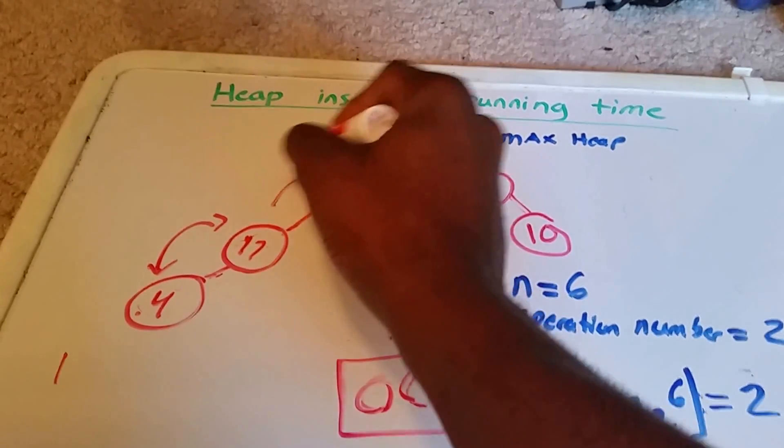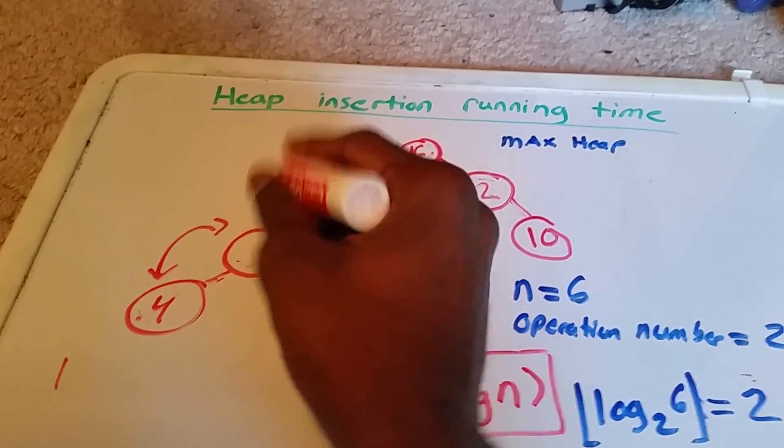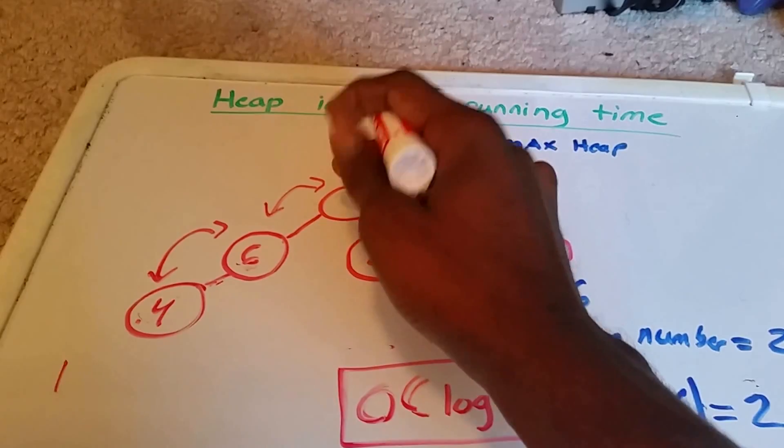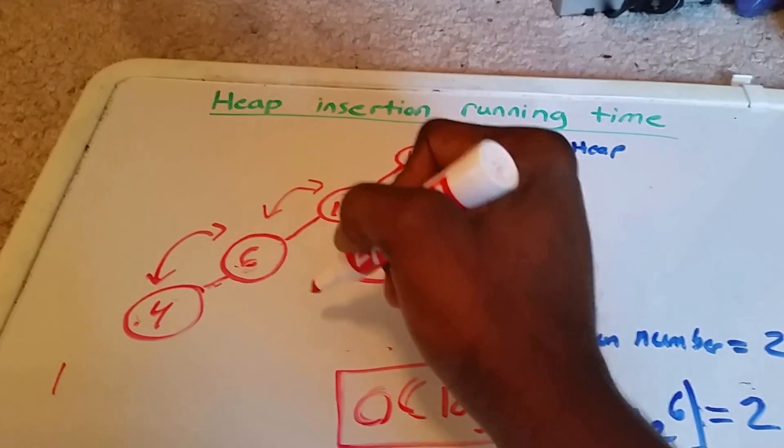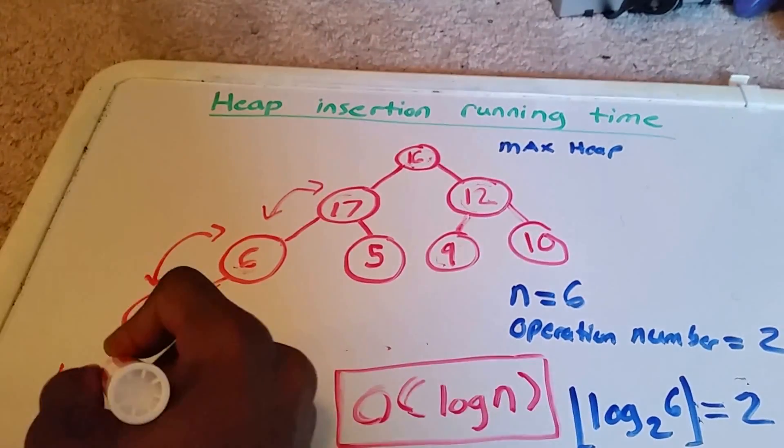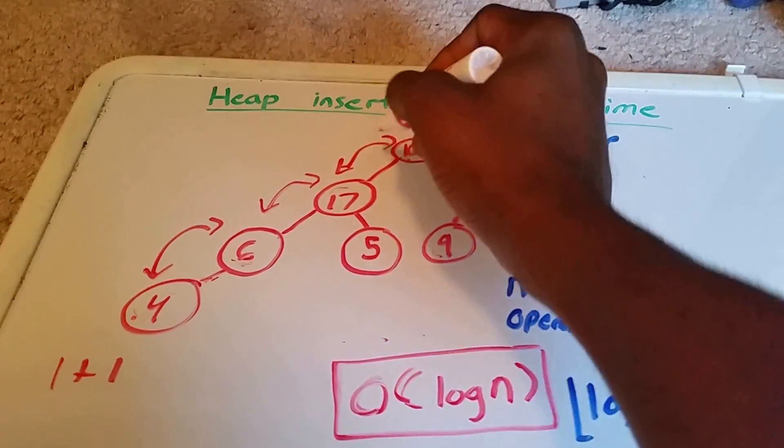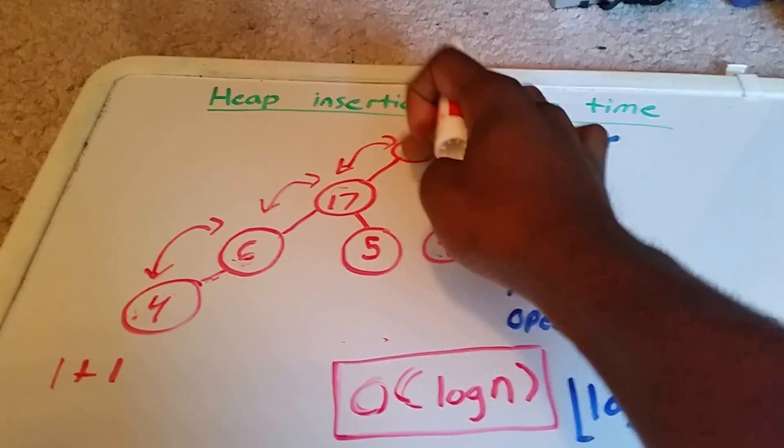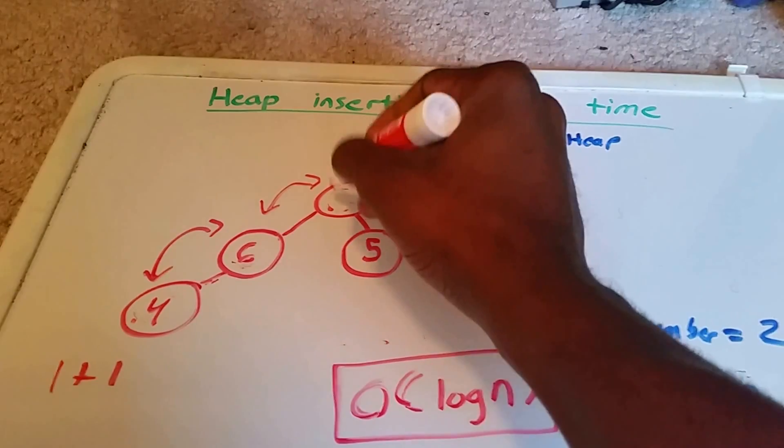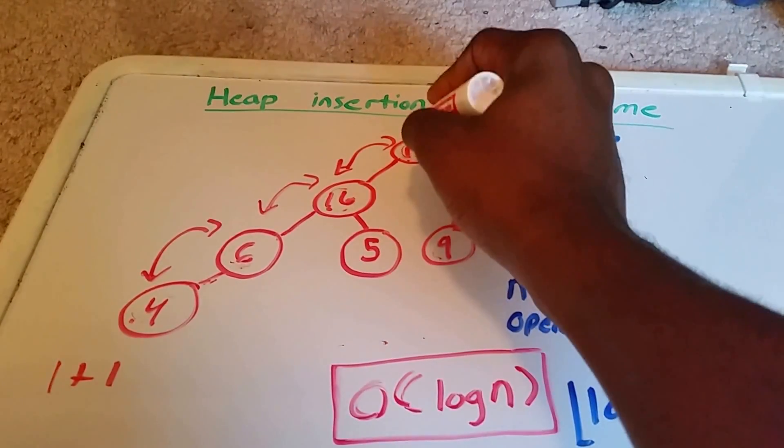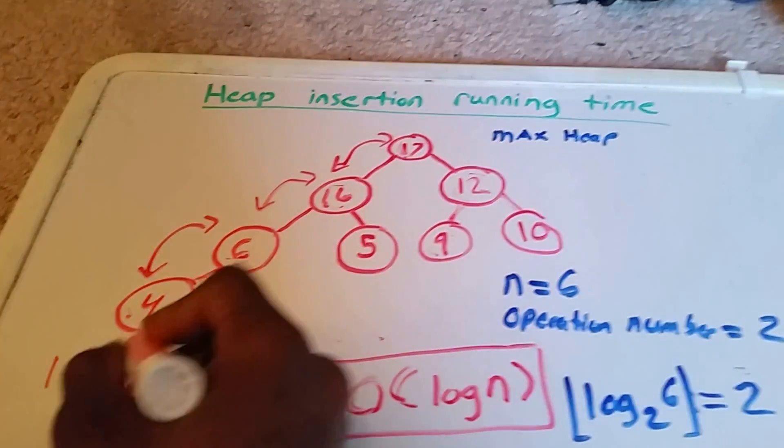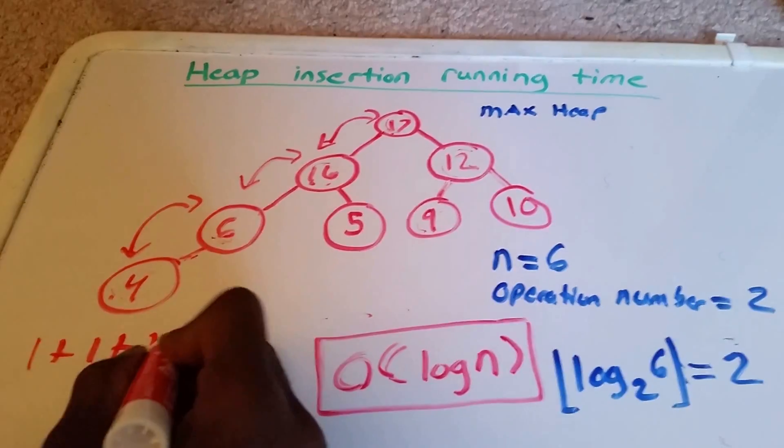Then we have to swap these two. That gives me 6. This gives me 17. That was 2 swaps. And then we have to swap these two, 16 and 17. So I'll put 16 here and 17 there. And add another swap there. So that's 3 swaps.